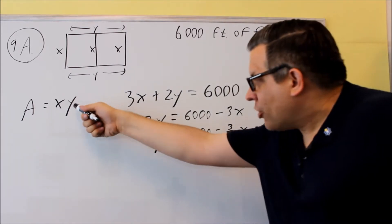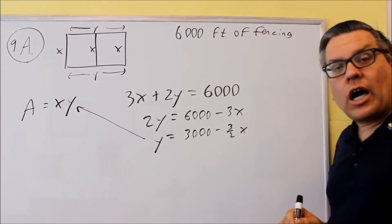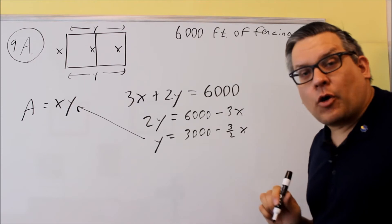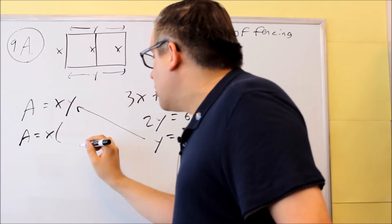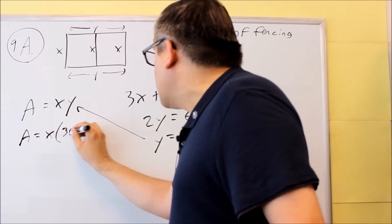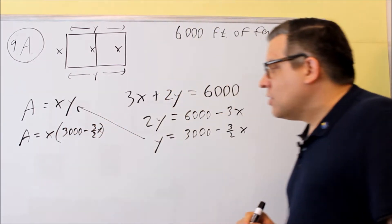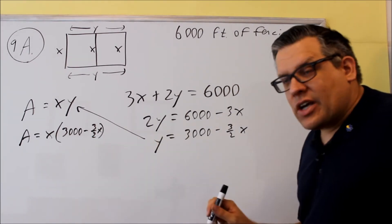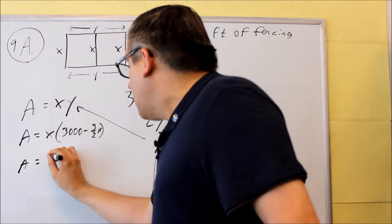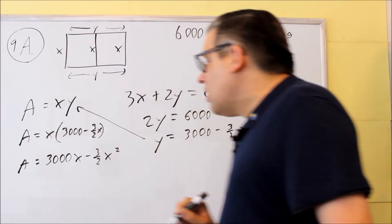I'm going to take this and put it into here, so this y will go into the y right there. We're replacing the y so that we get all one variable. Take out the y and we put in 3,000 minus 3 halves x. We're going to multiply this out and we get 3,000x minus 3 halves x squared.